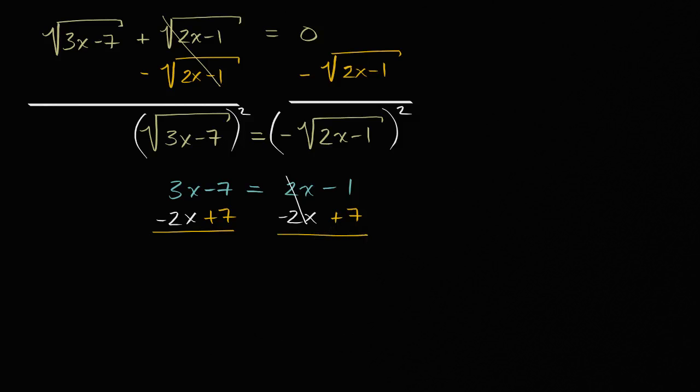We are going to get three x minus two x is x is equal to negative one plus seven. X is equal to six.